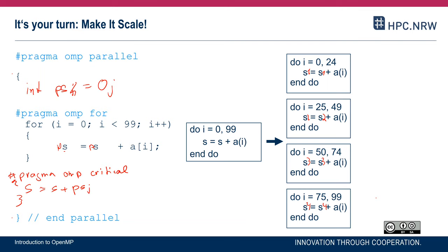In terms of scalability, what is the difference to the previous code? The significant difference is that the assumingly costly parallel computation — which takes long — can be executed without any synchronization. At the end, the only synchronization consists of these integer additions, done exactly as many times as there are participating threads. If the array dimension were not 100 but a couple of million, the omp for would take a while, while the critical section is just a cheap integer addition. This is correct code and it will scale — however, it is quite ugly.